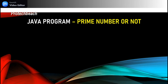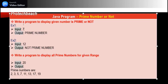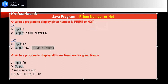There are two ways this may be asked in an interview. The first scenario is: write a program to display whether the given number is prime or not. For example, if the input is 7, the output will be 'prime number'; if the input is 12, the output will be 'not prime number'. A prime number is one that is divisible only by 1 or itself.